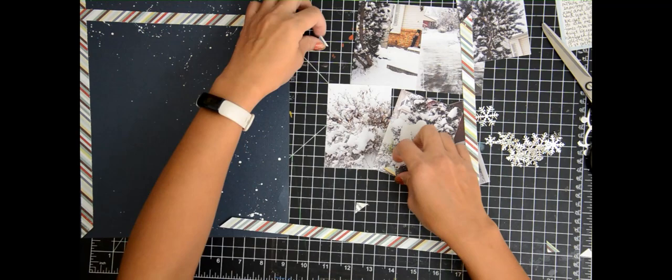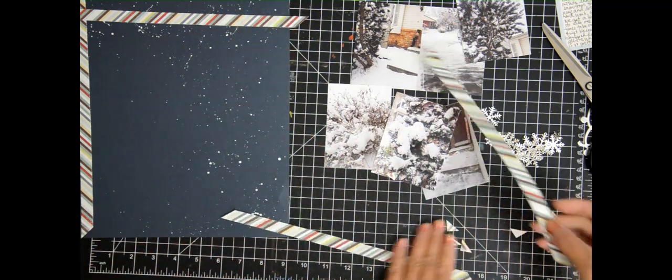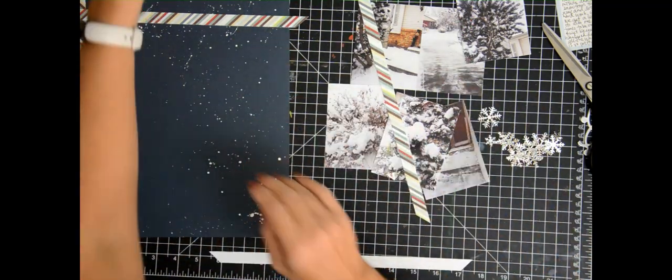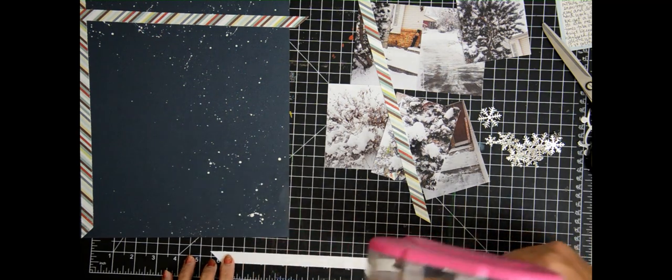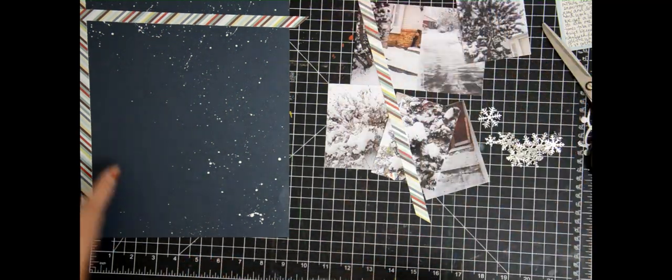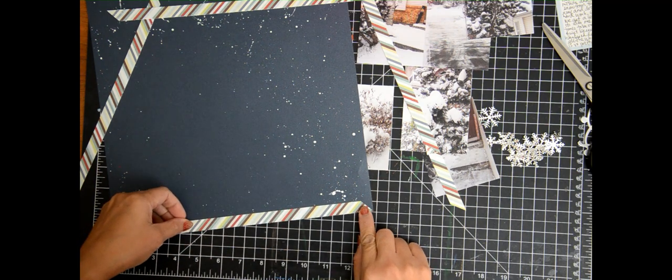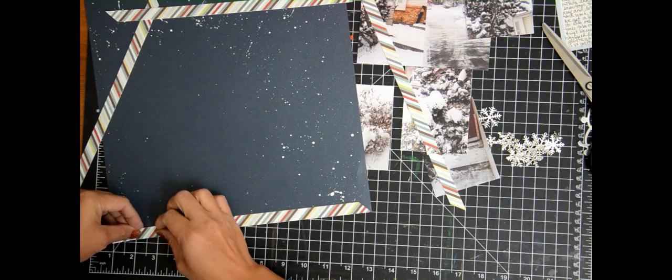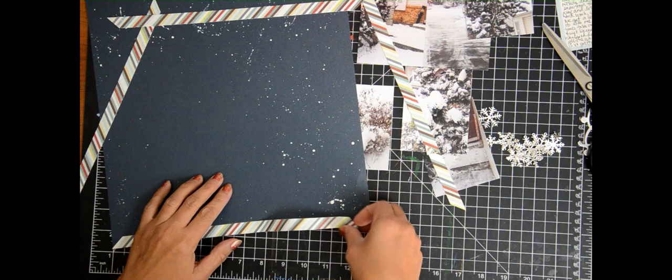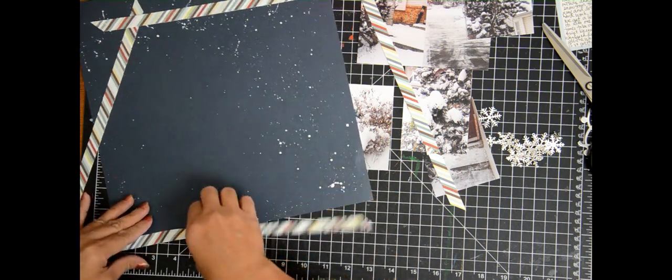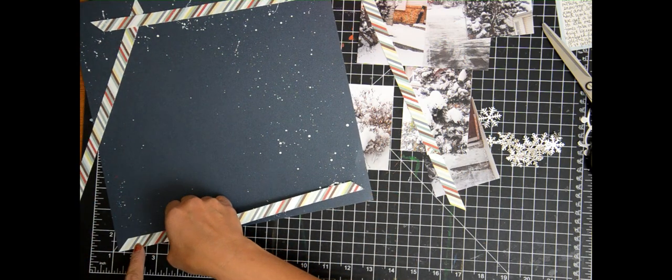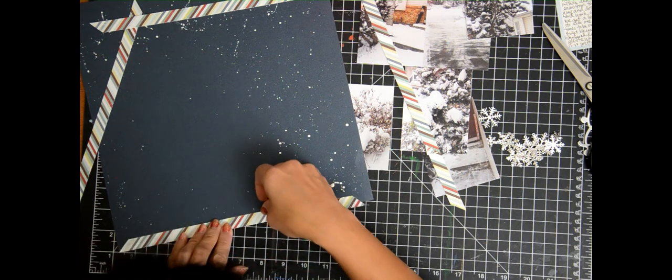I still appreciate a cardstock background, but now I just feel like just a cardstock background is a little bit too plain for me, and so I like to add a little bit of pattern. With this one I'm going to use this stripe border. I did pull out some papers from a winter pack, I believe it's an Echo Park one.